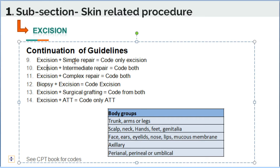So, only if simple repair is mentioned do you code excision alone. If intermediate repair or complex repair is mentioned with excision, then you have to code both every time.